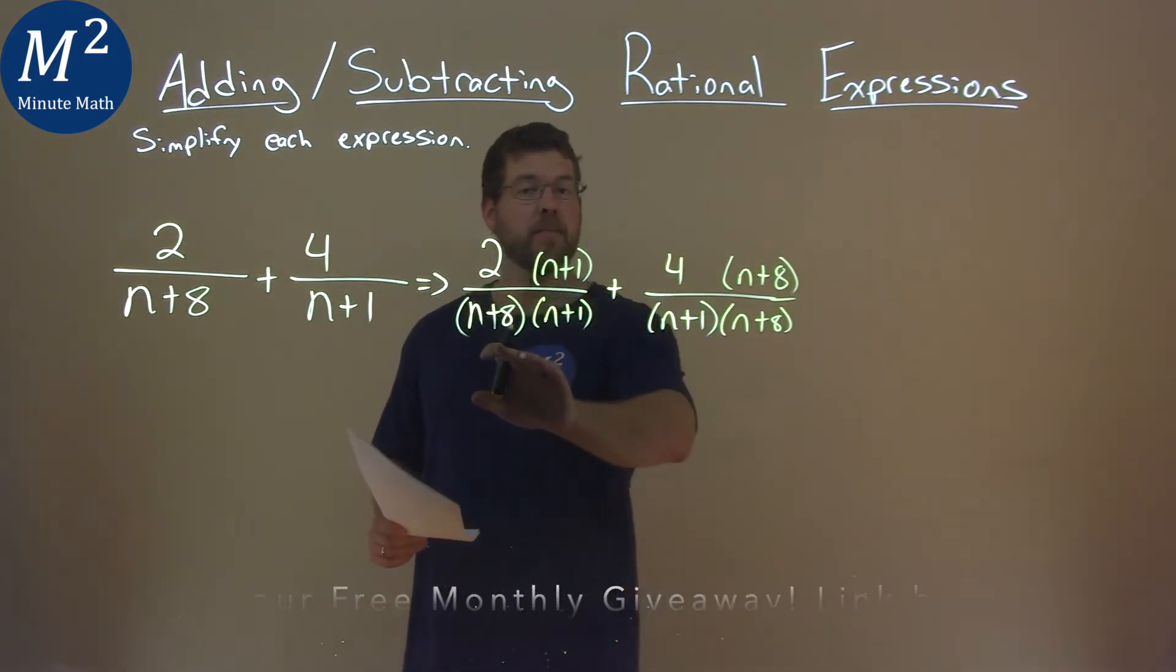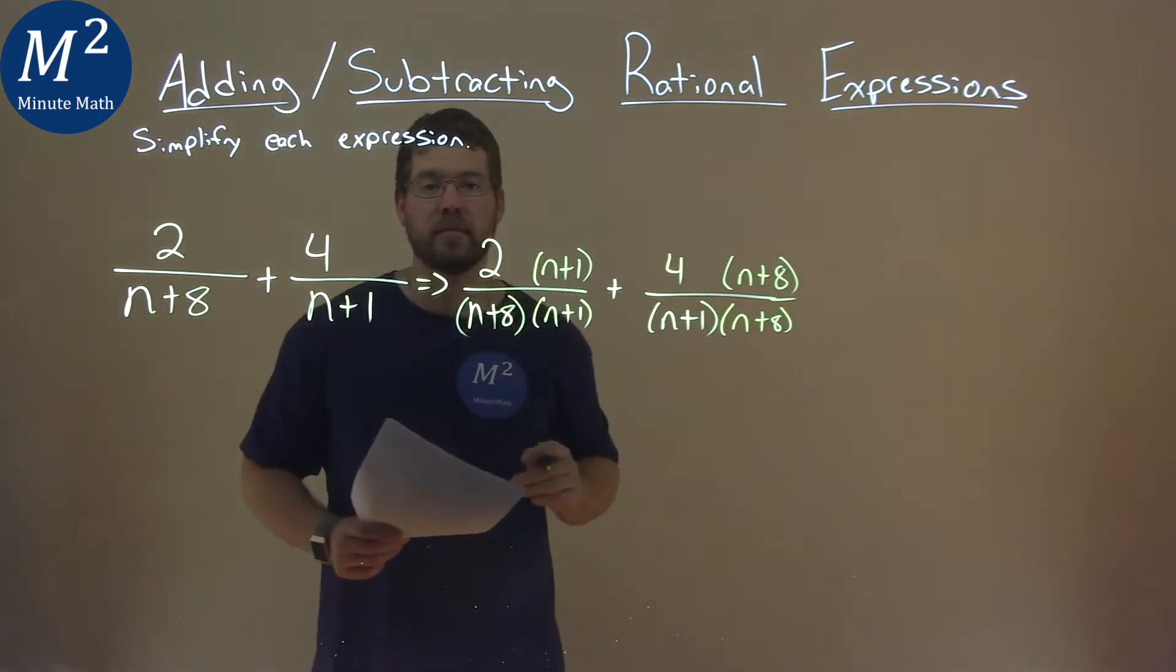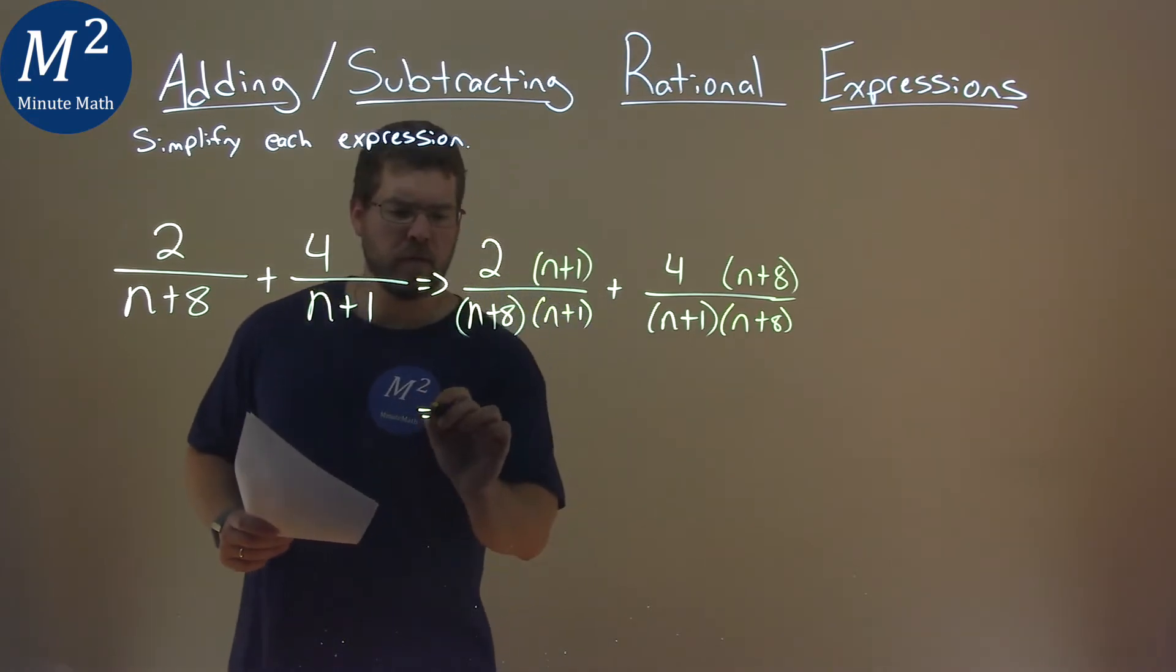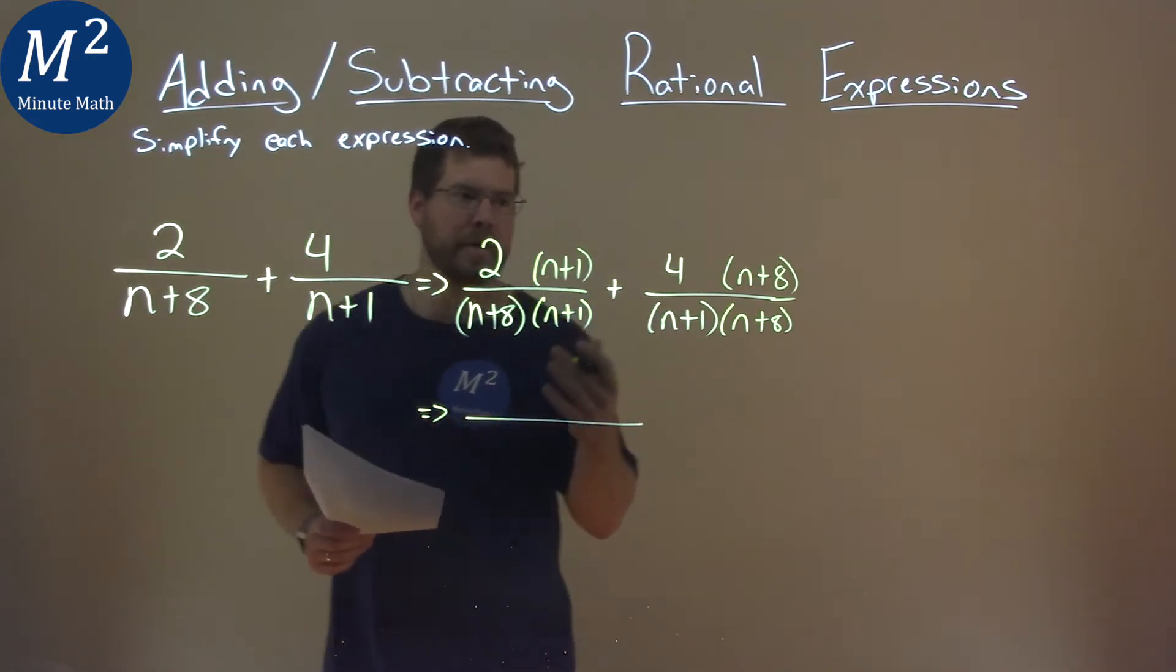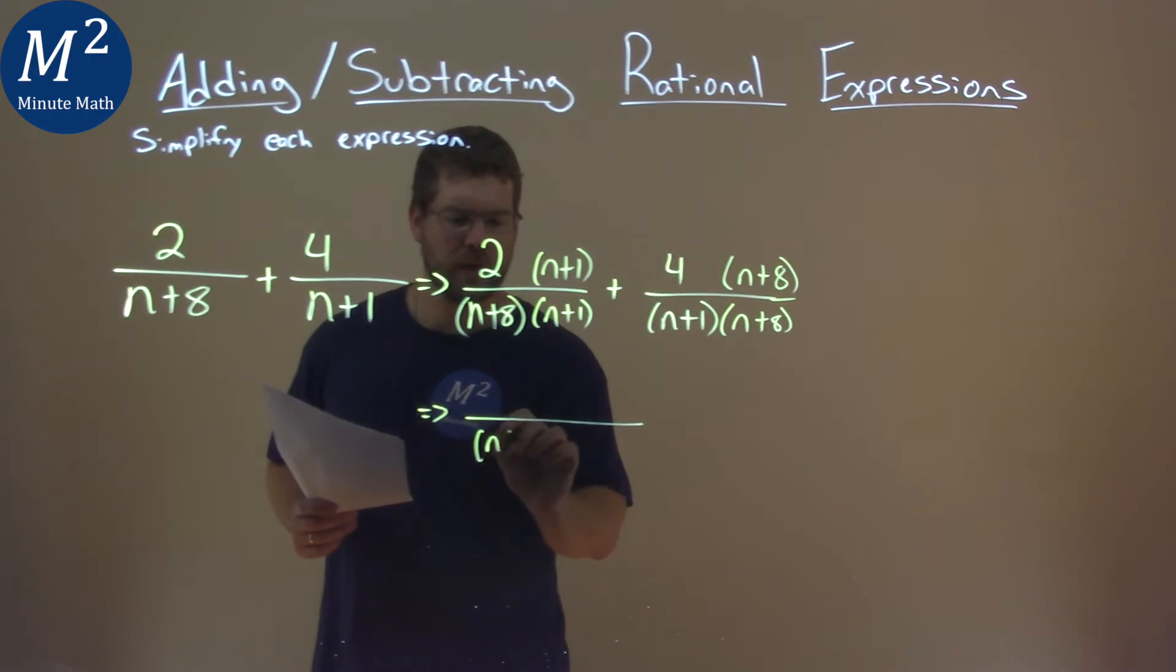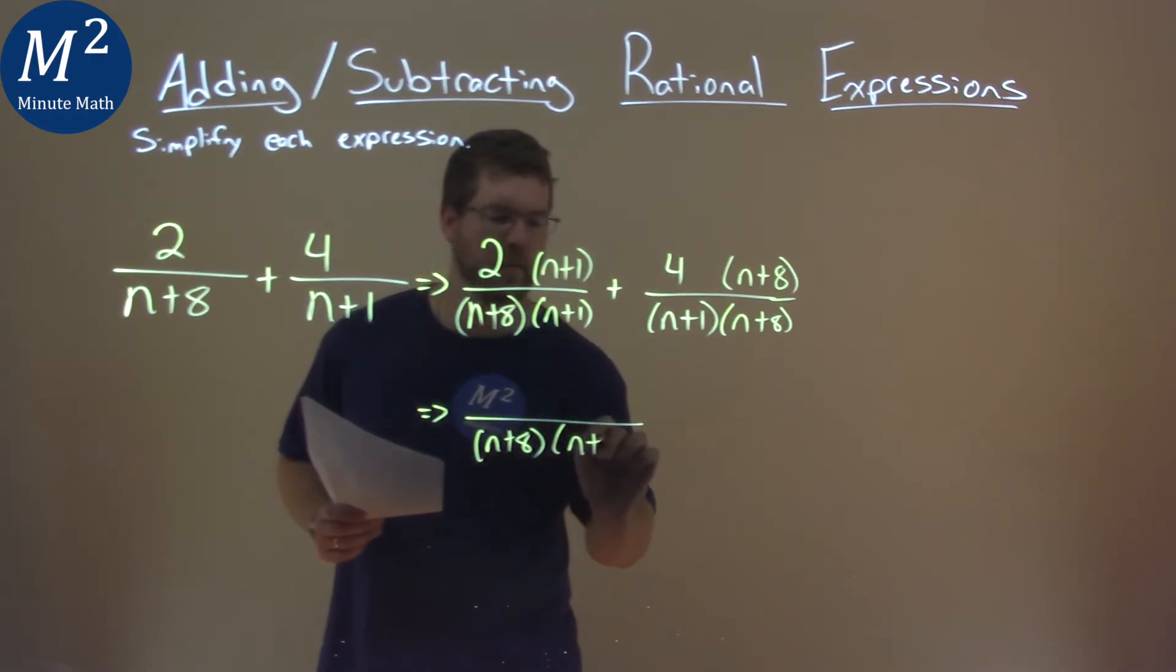We now have the same denominator of n plus 8 times n plus 1. So let's rewrite this now as one big fraction. We can combine it. We have n plus 8 here and n plus 1.